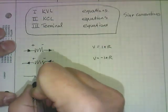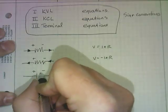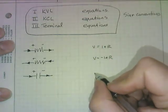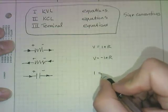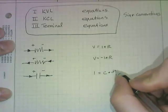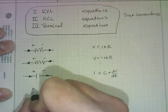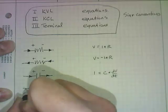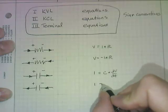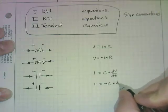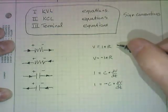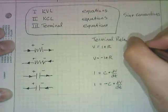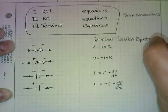If we look at a capacitor, then what we know is the current is going to equal the capacitance times the derivative of the voltage with respect to time. If, on the other hand, the current happens to be in the opposite direction through that capacitor, then we know that the current is going to equal the negative of the capacitance times the derivative of the voltage with respect to time. This is the terminal relation equation and how the signs impact it.